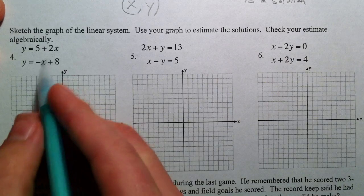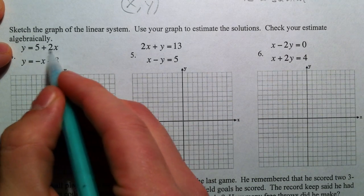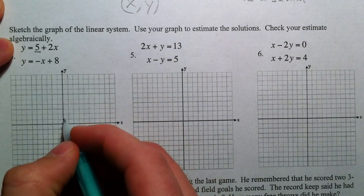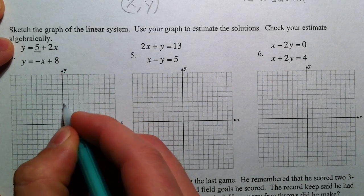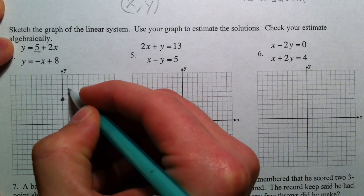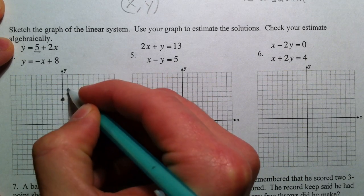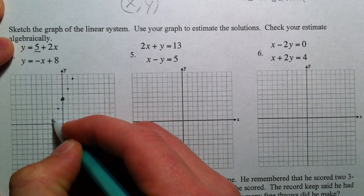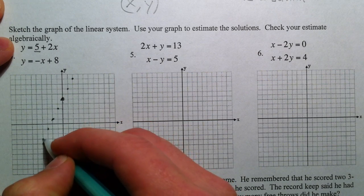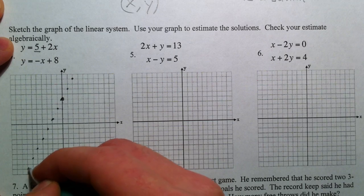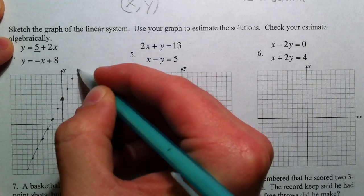So to graph these lines, y equals 5 plus 2x. You could just say, well, 5 is the y-intercept, so go up 1, 2, 3, 4, 5. And then the slope is 2, so up 2 and over 1. It's rising. You could also go backwards, continue the pattern the opposite way. And so there's your line.